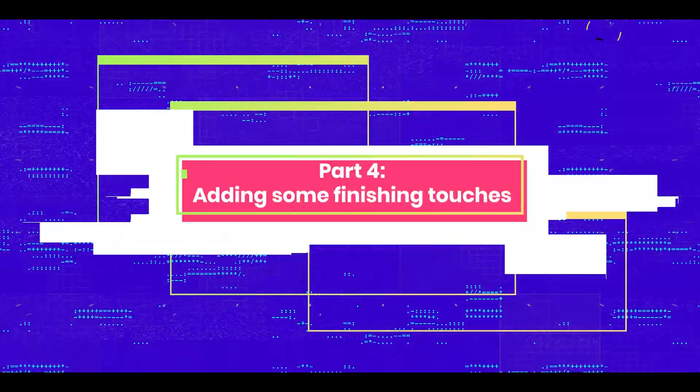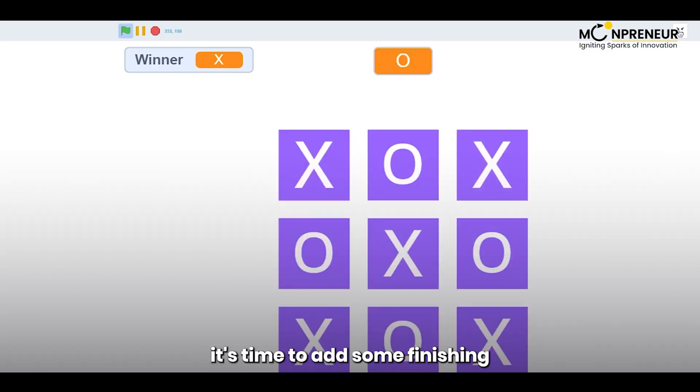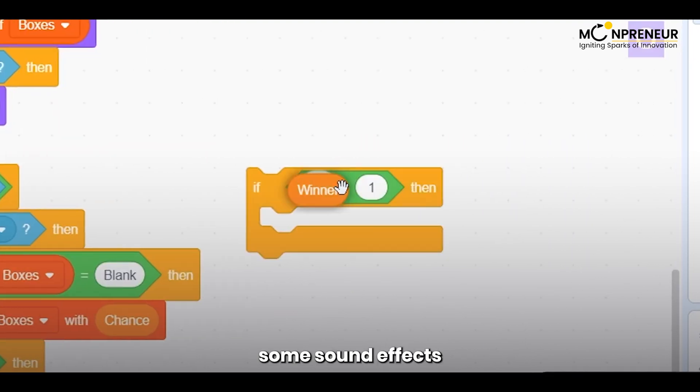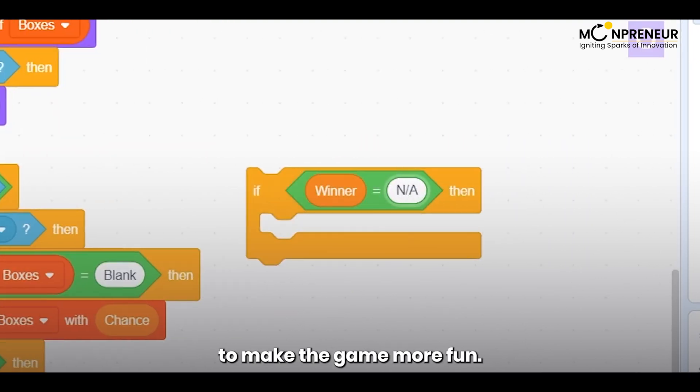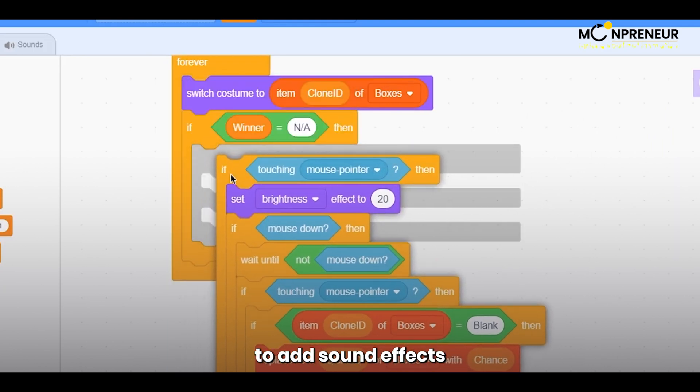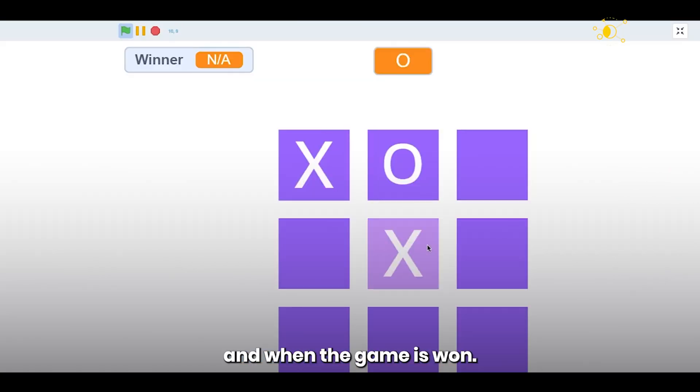Part 4. Adding Some Finishing Touches. Now that our game is working, it's time to add some finishing touches. We'll start by adding some sound effects to make the game more fun. We'll use Scratch's built-in sound library to add sound effects for when the player clicks on a cell, when a move is made, and when the game is won.